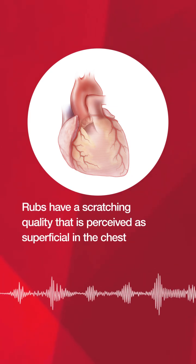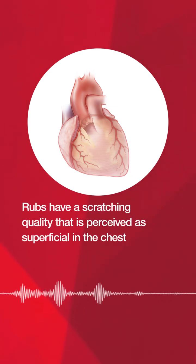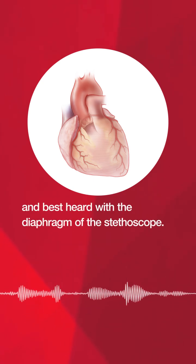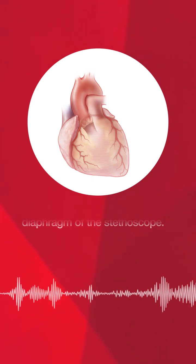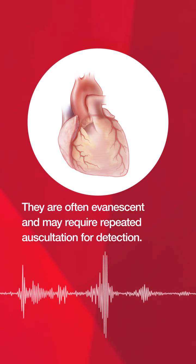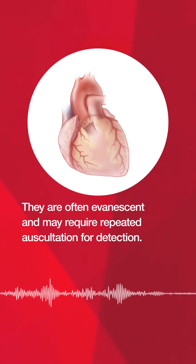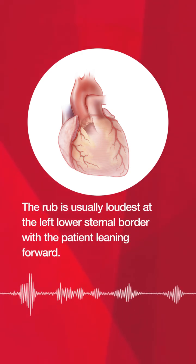Rubs have a scratching quality that is perceived as superficial in the chest and best heard with the diaphragm of the stethoscope. They are often evanescent and may require repeated auscultation for detection. The rub is usually loudest at the left lower sternal border with the patient leaning forward.